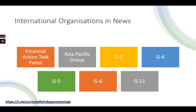The FATF has 40 recommendations to prevent money laundering and 9 recommendations to prevent financing to terror groups. The original objective was to combat money laundering, and in 2001 they added combating terrorism financing. When it comes to money laundering, there are 40 strategies given by the FATF. Nine recommendations are used by the FATF for preventing financing to terrorist groups.